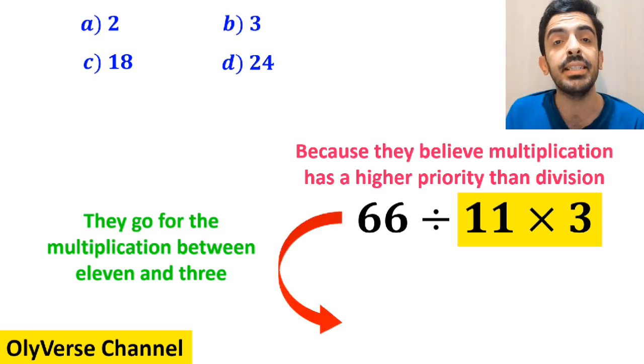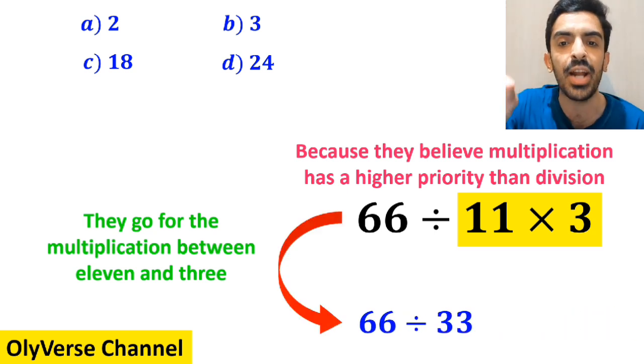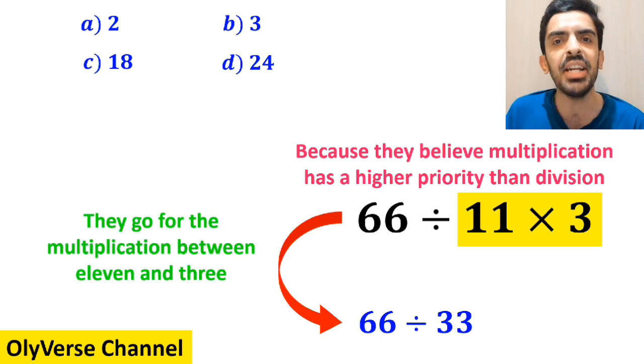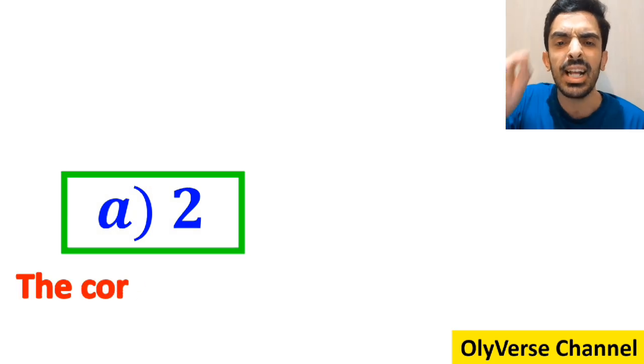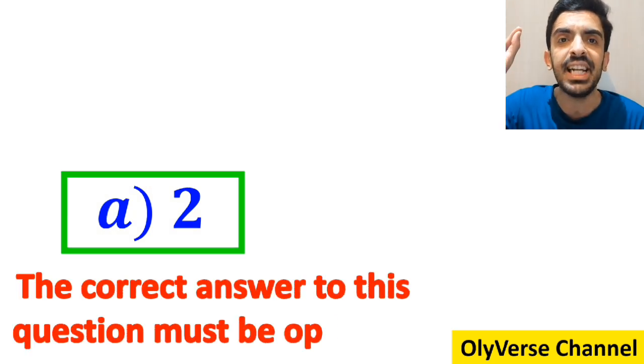So they simplify this expression and rewrite it as 66 divided by 33, which finally gives them the answer 2. Then, without any hesitation, they conclude that the correct answer to this question must be option A.